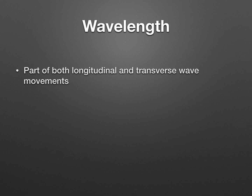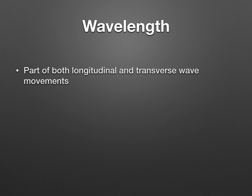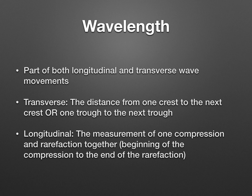The next part is wavelength, found in both longitudinal and transverse wave movements. In a transverse wave, it's the distance from one crest to the next crest, or one trough to the next trough — they're the same distance. In longitudinal, it's the measurement of one compression and rarefaction together — from the beginning of a compression to the end of the next rarefaction. We'll draw these in class, which should help your understanding.